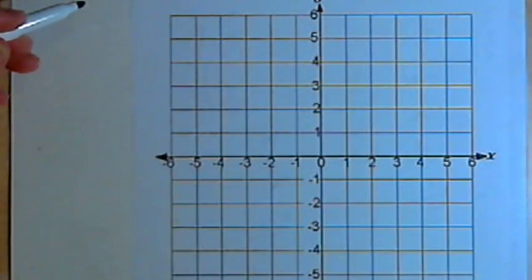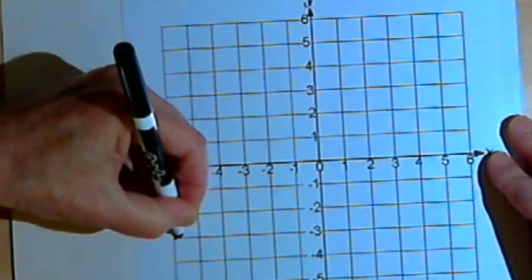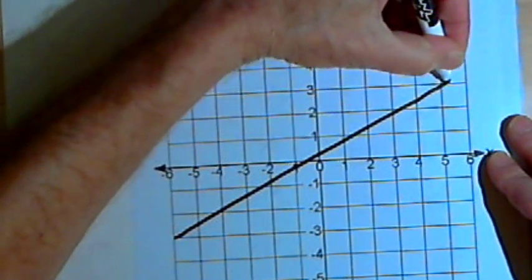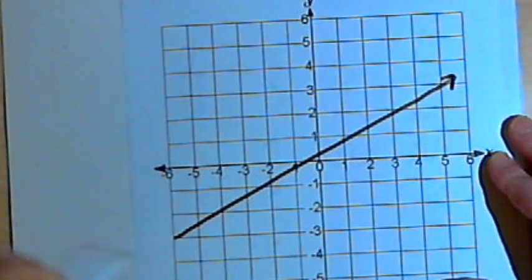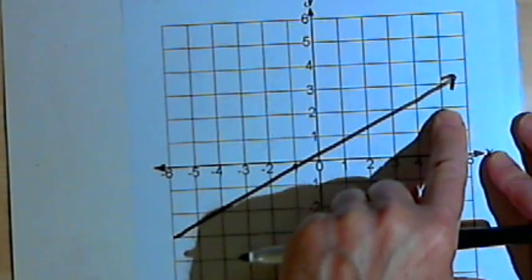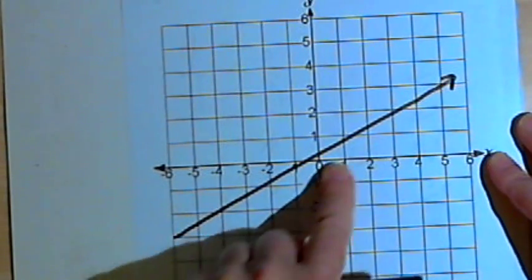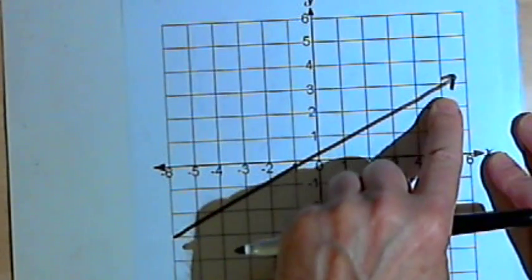Let's start with an increasing function. If I draw a line like this, let's say this is the graph of a function, we say that this is an increasing function. In other words, as I move my finger from left to right along the graph, I'm also moving up towards the top of the graph, towards the top of the page.